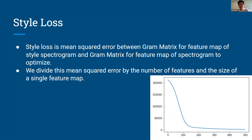Both our style and content loss functions are very similar to those used for image style transfer, because at this point we're operating on spectrograms — a similar problem. The style loss function is the mean squared error between the gram matrix for the feature map of the style spectrogram and the gram matrix for the feature map of the spectrogram we're optimizing. Since we're taking the gram matrix, the MSE can get quite high, so we divide it by the number of features in the feature map times the size of the spectrogram. This graph shows the style loss over 500 iterations of training — it clearly decreases over the 500 iterations.